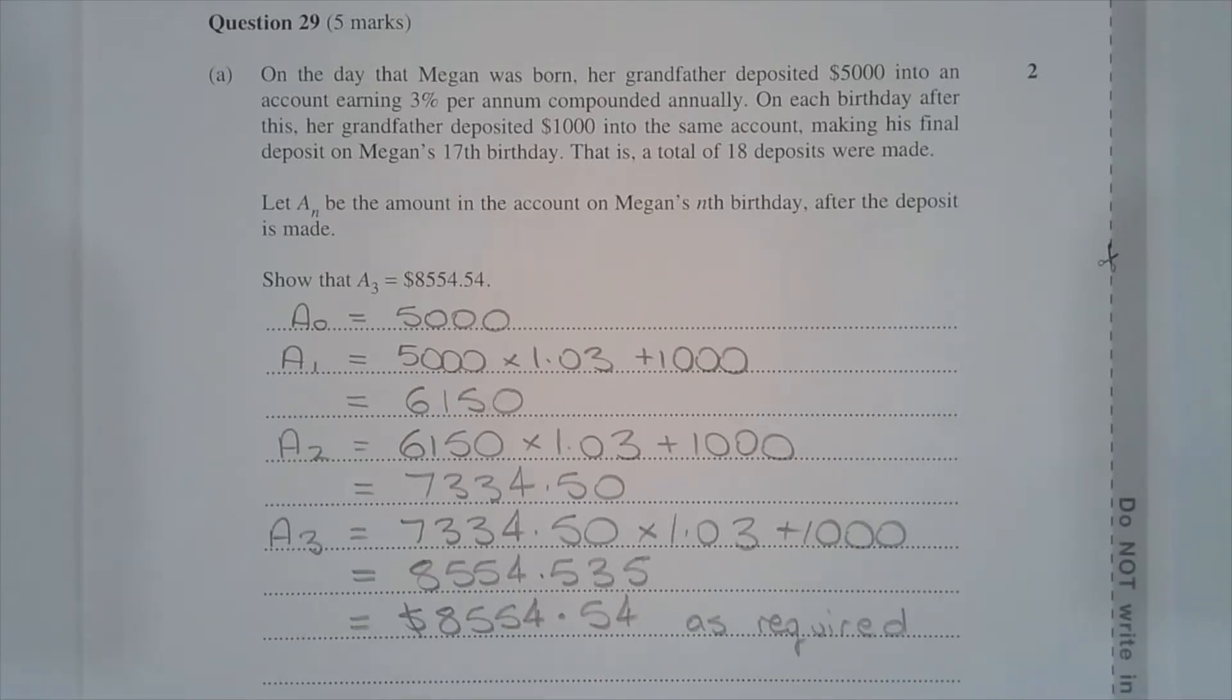This may be answered recursively. A0 equals $5,000 and that represents the amount that Megan has in her account on the day she was born. A1 is equal to $5,000 multiplied by 1.03 plus 1,000 and that equals $6,150. A2 is equal to $6,150 multiplied by 1.03 plus 1,000 and that equals $8,554.535.